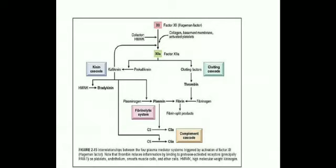This is the figure that shows the relation between the four plasma mediator systems: clotting cascade, kinin cascade, fibrinolytic system, and complement cascade, how they all work together. As you can see, factor 12 is converted into 12A and that converts the prekallikrein to kallikrein. That will obviously produce the bradykinin.